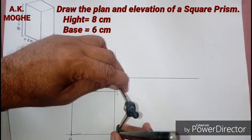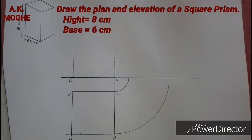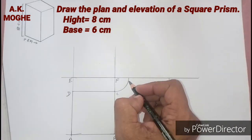Then take a measurement as the height of the prism. In this rectangular prism, the height is nothing but 8 cm.